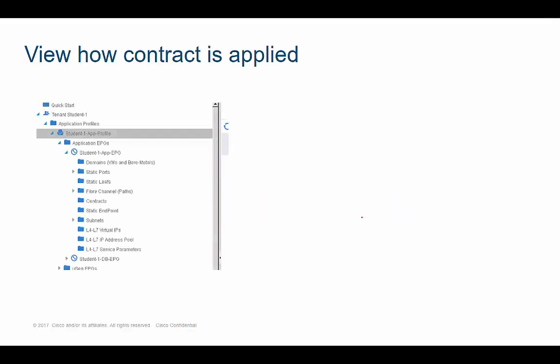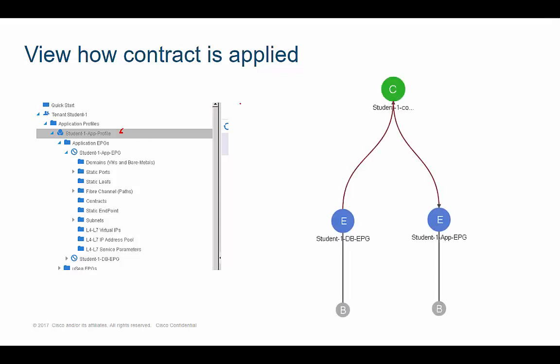A couple of contract benefits: compared to ACLs, contracts are a lot easier to read. With ACLs you might see a long list of access control entries full of cryptic information with no clear intent. Contracts are pretty simple. If I click on the app profile and look at the screen to the right, I can see the contract name, the two EPGs it's applied to, and which EPG is the provider versus the consumer based on the arrow direction.